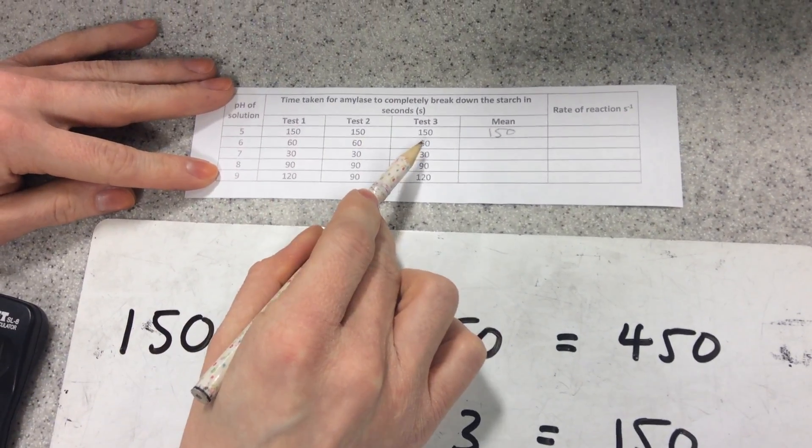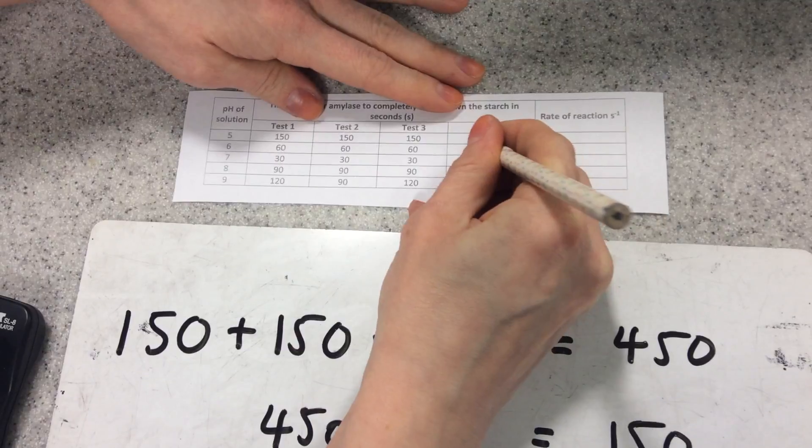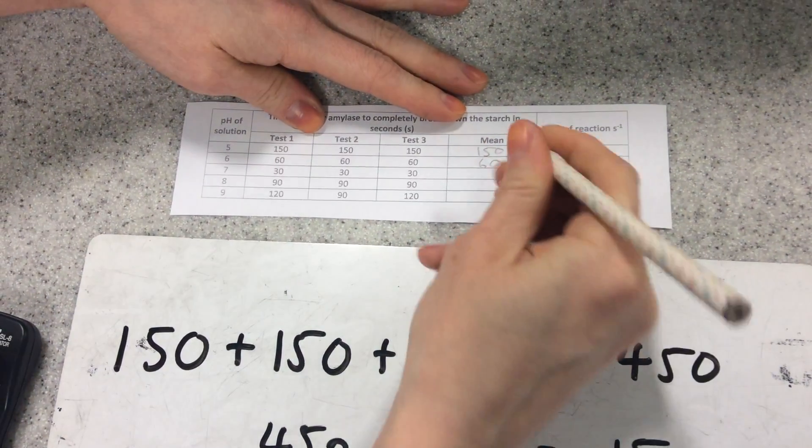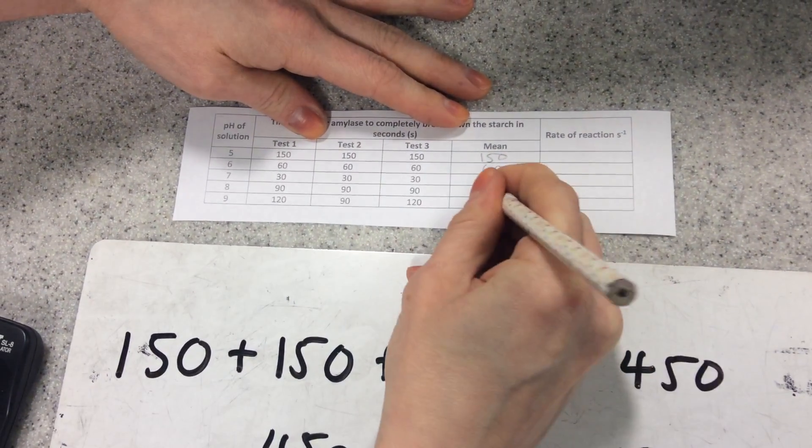60 plus 60 plus 60, get the total, divided by three, will be 60. My next one I've worked out to be 30, my next one 90,